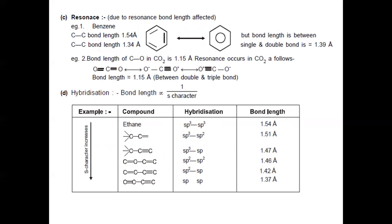Due to resonance, bond length is also affected. The C-C single bond length is 1.54 Å and C=C double bond length is 1.34 Å. But in benzene, delocalization of pi electrons takes place, so the bond length is intermediate between single and double bond at 1.39 Å. Regarding hybridization: bond length is inversely proportional to S-character — as S-character increases, bond length decreases.